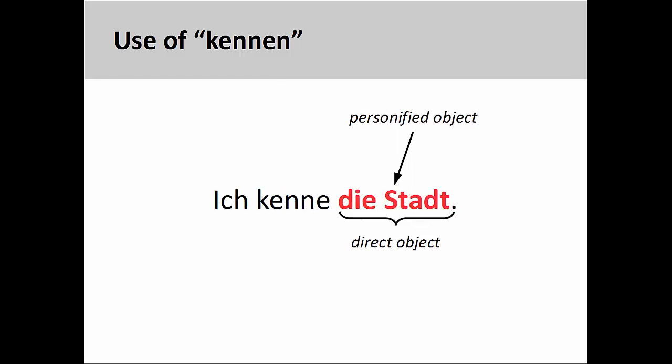We can also use Kennen with objects. In the sentence 'Ich kenne die Stadt' — I know the city — the direct object is not a person, although living in the city allows me to know it as if it were a person, and I have developed a close relationship to it. Since the object has been personified in this manner, the verb Kennen can be used.